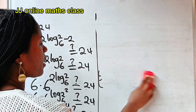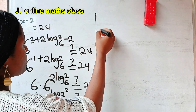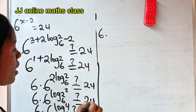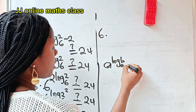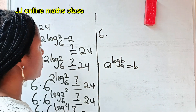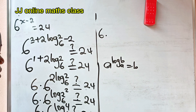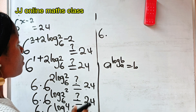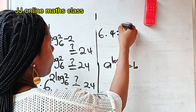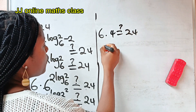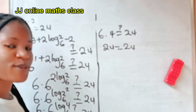Now, recall that when you have a to the power of log b base a, this is equal to b. So 6 to the power of log 4 base 6 equals 4. Therefore we have 6 multiplied by 4, which gives us 24. And yes, 24 is equal to 24, confirming that our answer is correct.